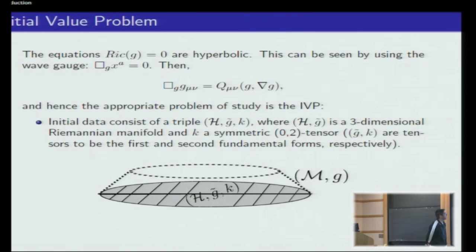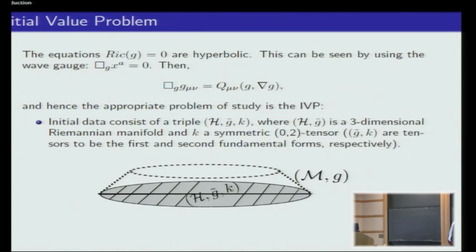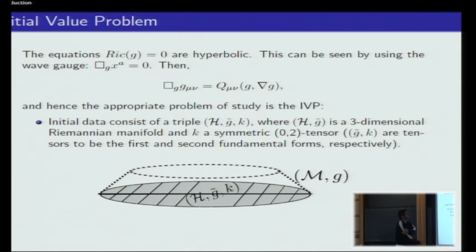To formulate the initial value problem, you need to know the space at some time, which means you have a section of your manifold that is a Riemannian manifold. You also need to know the time derivative of the metric at that time, which is simply the second fundamental form. So what you need is a Riemannian metric on this section and the second fundamental form — this is the initial value problem.